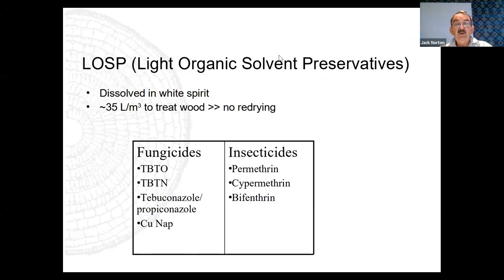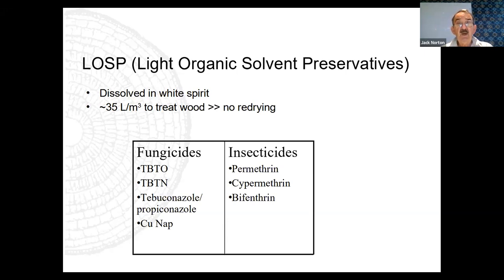Organic solvent preservatives are sometimes used on balustrading and handrail. They're dissolved in organic solvents and the beauty is you treat timber in its final shape and form. When you treat with water-based preservatives it raises the grain — pine absorbs about 500-600 litres per cubic metre of water, hardwoods around 300-400 litres — which changes the shape and raises the grain. With LOSP preservatives that doesn't happen. They contain both fungicides to kill fungi and insecticides.